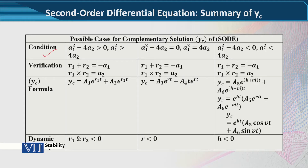Verification کی بات کریں تو condition یہ ہوتی ہے کہ دونوں roots کا sum minus a1 کے برابر ہو، اور دونوں roots کا product a2 کے برابر ہو. یہ negative sign تینوں cases میں موجود ہے. تو جو condition ہم نے پہلے case میں دیکھی تھی وہ باقی دو cases میں بھی hold کرے گی — یہ ہے roots کو verify کرنے کا طریقہ کار.